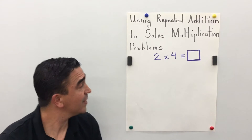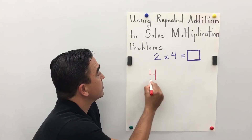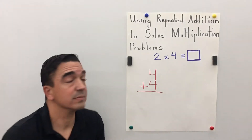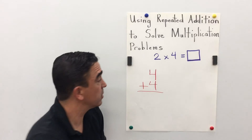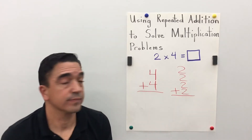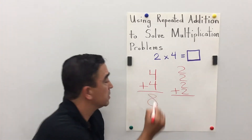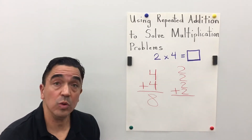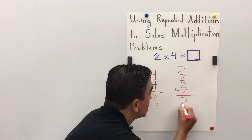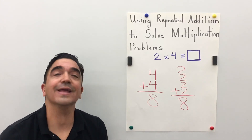2 times 4. Well, that's the same thing as saying 2 fours. Or, I could say 4 twos. 4 plus 4 is 8. 2 plus 2 plus 2 plus 2 equals 8. So, 2 times 4 equals 8.